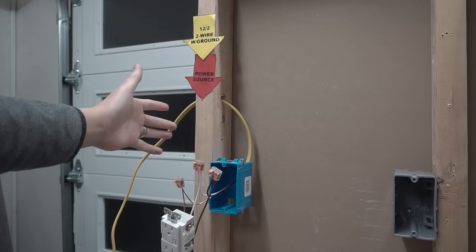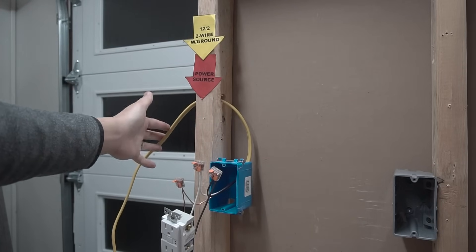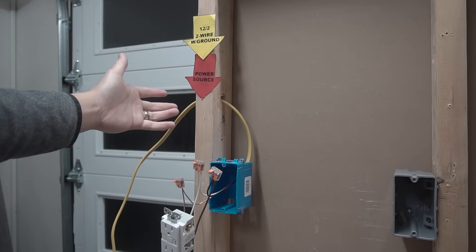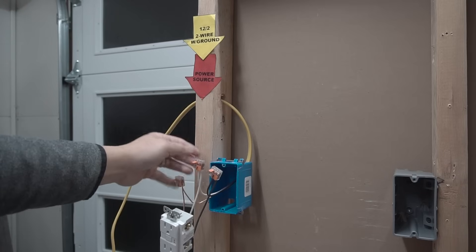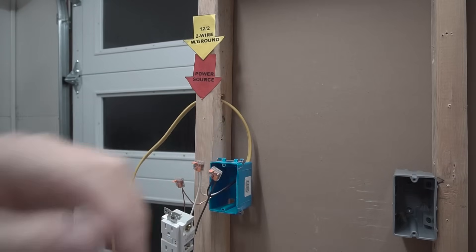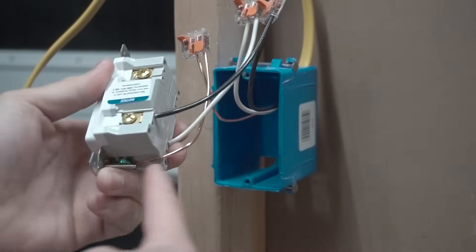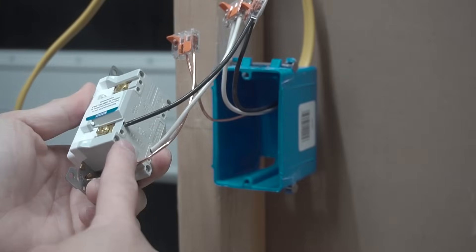We have our 12-2 with ground wire. This is coming from our power source, which is a 20-amp circuit breaker. We are using a 12-gauge and this is going to our first J-box. We have our pigtailed GFCI, which is pigtailed onto the line side, not the load on the line side.